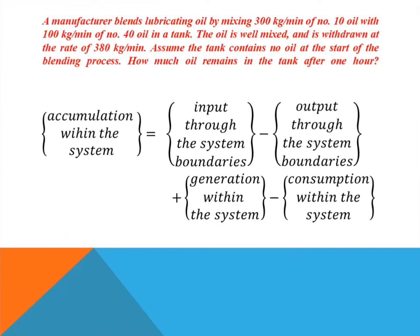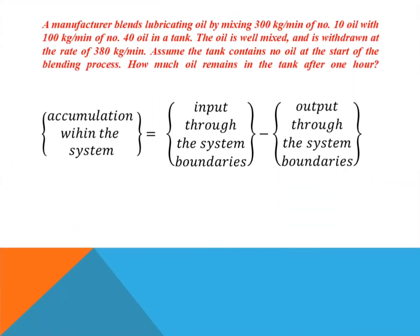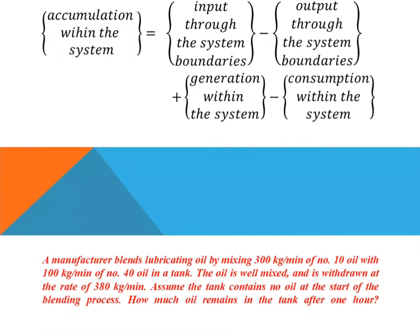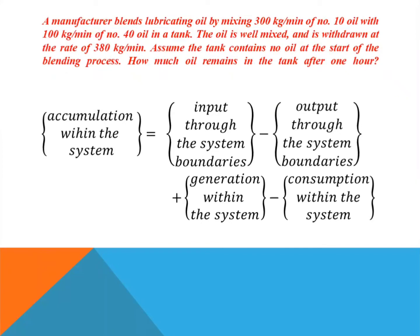As we know, the general material balance for a component in a system can be written as: accumulation within the system equals input through the system boundaries minus output through the system boundaries plus generation within the system minus consumption within the system. In the absence of reaction, the material balance equation reduces to accumulation equals input minus output, as generation and consumption within the system will both be zero.